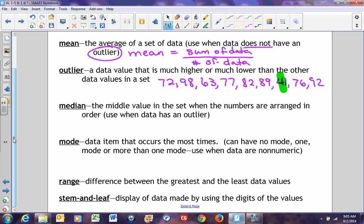Median is the middle value in a set when the numbers are arranged in order. You use it when the data has an outlier. If I was to find a median, you just look at your values, put them in order from smallest to largest or largest to smallest, and then you find the middle number.